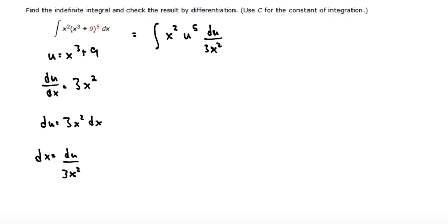So now we have an x squared on top and an x squared on bottom. Those can cancel. Bring the 1 third out to the front to get 1 third integral of u to the 5th du.